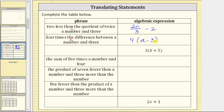We do need the parentheses here, otherwise we would just have four times a, not four times the difference. In the next row we are given the expression and asked to write the phrase. We read this expression as three times the quantity b plus five, or three times the sum of b and five. Remember, a sum implies addition. But for the variable b, let's just use a number. So let's write the phrase as three times the sum of a number and five.